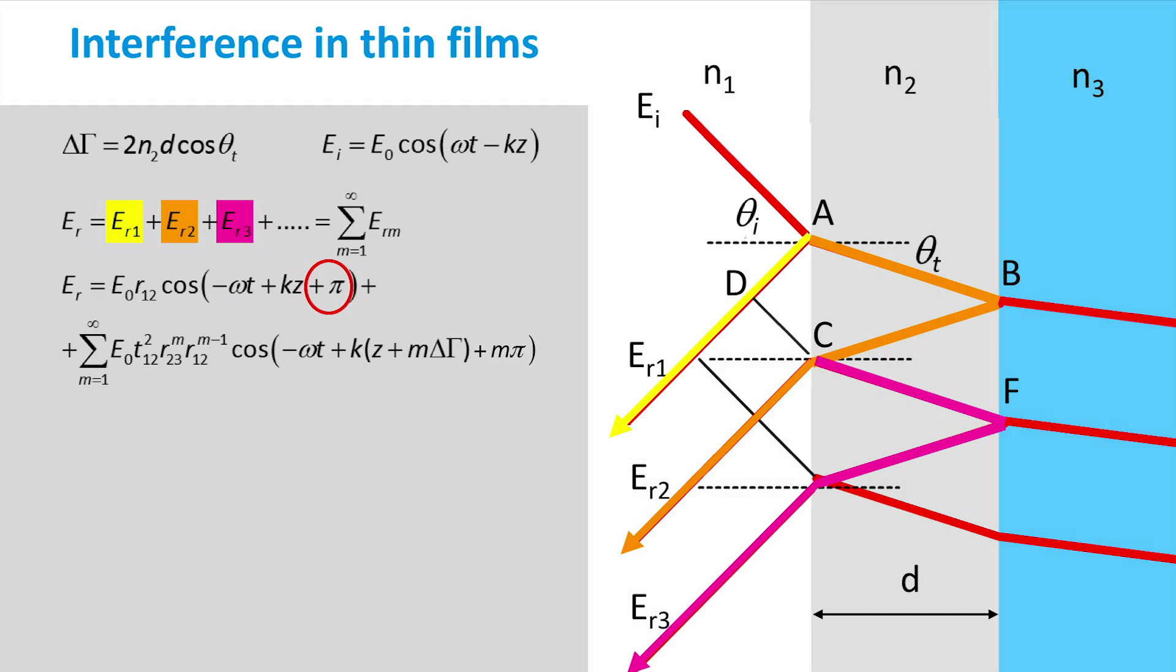Notice the 1 pi phase shift with respect to the incident wave. As discussed in the previous section, this phase shift occurs when a wave is reflected off the surface of a material with a higher refractive index than the one the wave was travelling through.